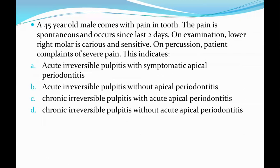Next question: a 45-year-old male patient comes with pain in a tooth. The pain is spontaneous and has occurred since the last two days. On examination, the lower right molar is carious and sensitive. On percussion, the patient complains of severe pain. The options are: A) acute irreversible pulpitis with symptomatic apical periodontitis, B) acute irreversible pulpitis without apical periodontitis, C) chronic irreversible pulpitis with acute apical periodontitis, D) chronic irreversible pulpitis without acute apical periodontitis.